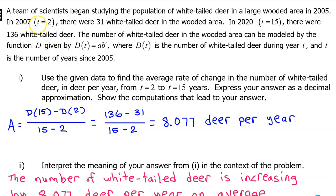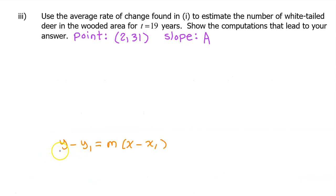We are going to use point-slope form to write the equation of the secant line. So we're going to need a point and the slope. For the point, we can use one of the input-output pairs given to us in the setup. For example, we can use the point 2 comma 31. The slope is always the average rate of change. And as long as you wrote a equals in front of your calculations, we can now use a for the average rate of change. We will use a for the slope.